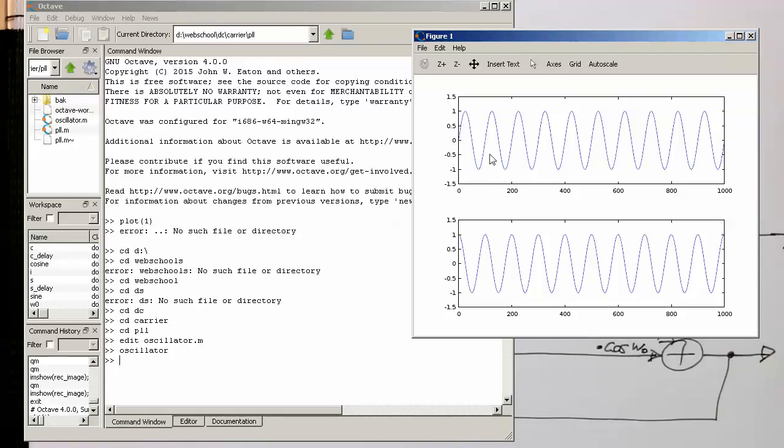So one, obviously a sine wave and the other one, a nice cosine wave for 1000 time steps. Very simple to generate.